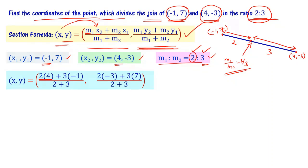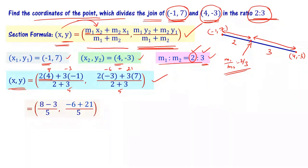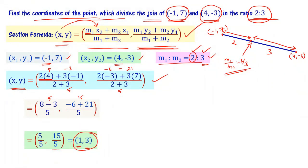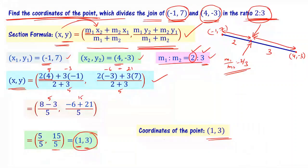Substituting into the section formula: x comma y equals (m₁·x₂ plus m₂·x₁) divided by (m₁ plus m₂) comma (m₁·y₂ plus m₂·y₁) divided by (m₁ plus m₂). This gives (2×4 plus 3×minus1) divided by 5 comma (2×minus3 plus 3×7) divided by 5, which simplifies to (8 minus 3)/5 comma (minus 6 plus 21)/5, giving 5/5 comma 15/5, so the coordinates are (1, 3).